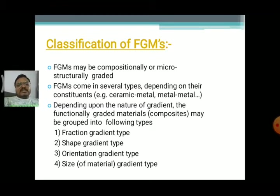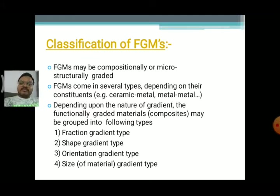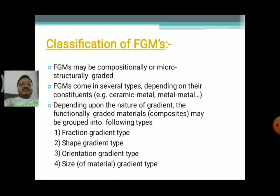The second classification is FGM classified on several types depending on their constituents — metals, ceramics, polymers. These are the constituents: carbon-carbon fiber, ceramic-metal, metal-metal, metal-polymer, and metal combinations. Different types of constituents are there, and earlier we have seen the ceramic-metal composition — this is the second type of classification.